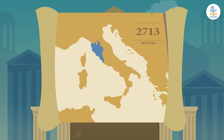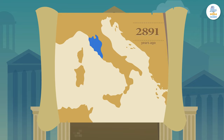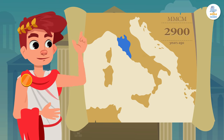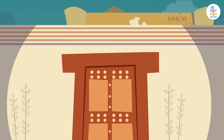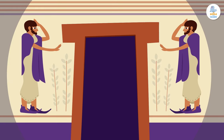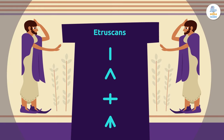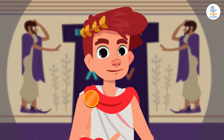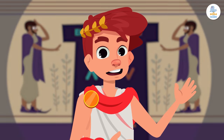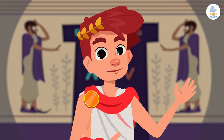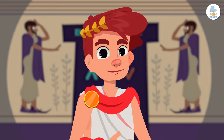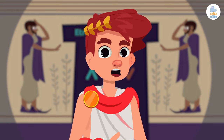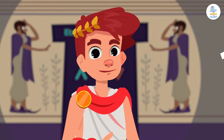The Etruscans were a group of people who lived in Tuscany, Italy, about 2,900 years ago — incredible, right? The Etruscans created a numbering system using symbols, and later the Romans were inspired by them to create a similar system. The Romans represented numbers by drawing them like sticks.